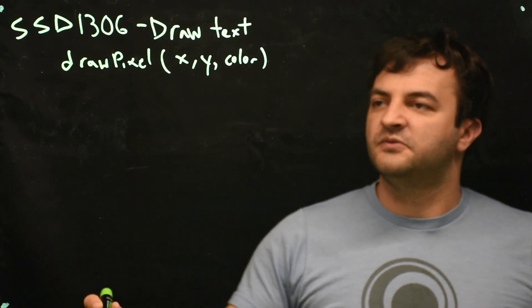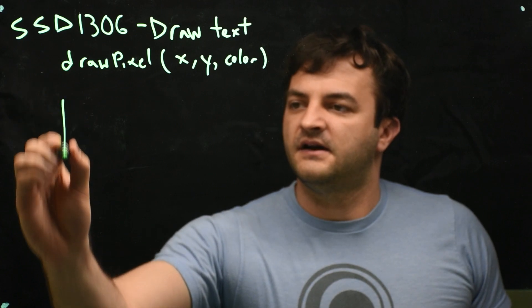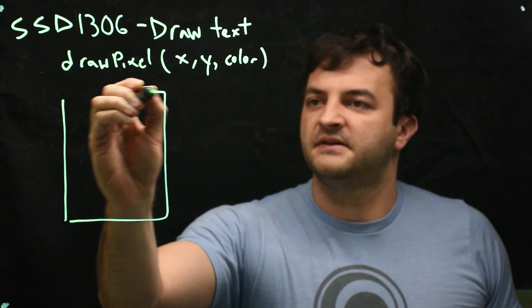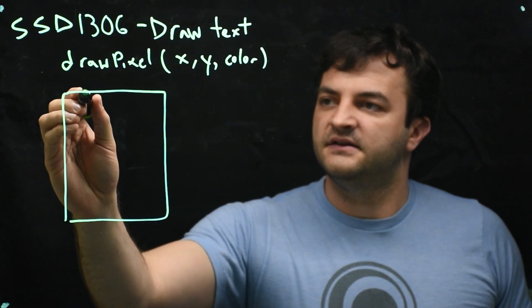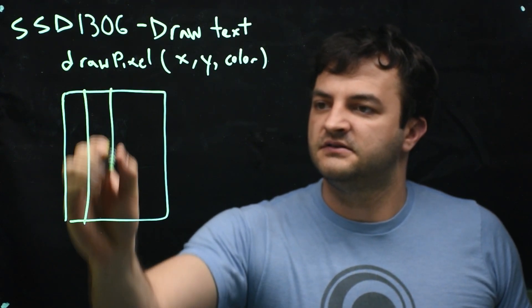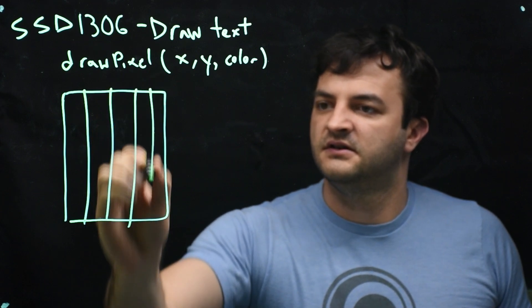Let's do that again on the board. So we've got this pixel map, this bitmap, of every character, and it's five rows, 1, 2, 3, 4, 5.